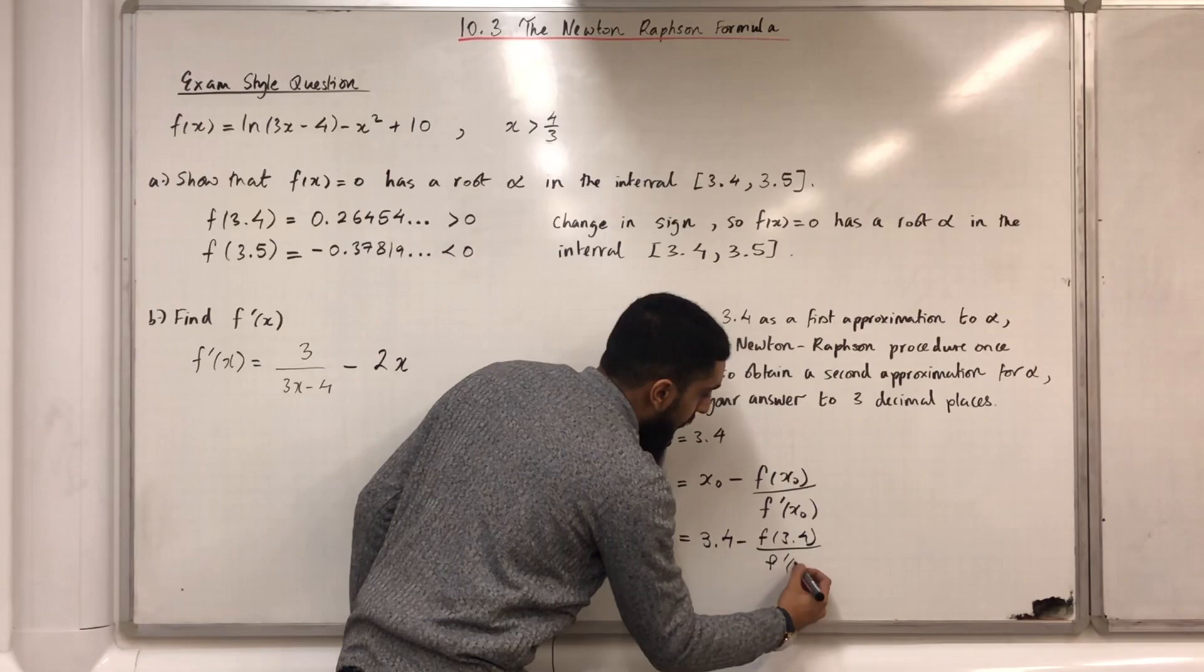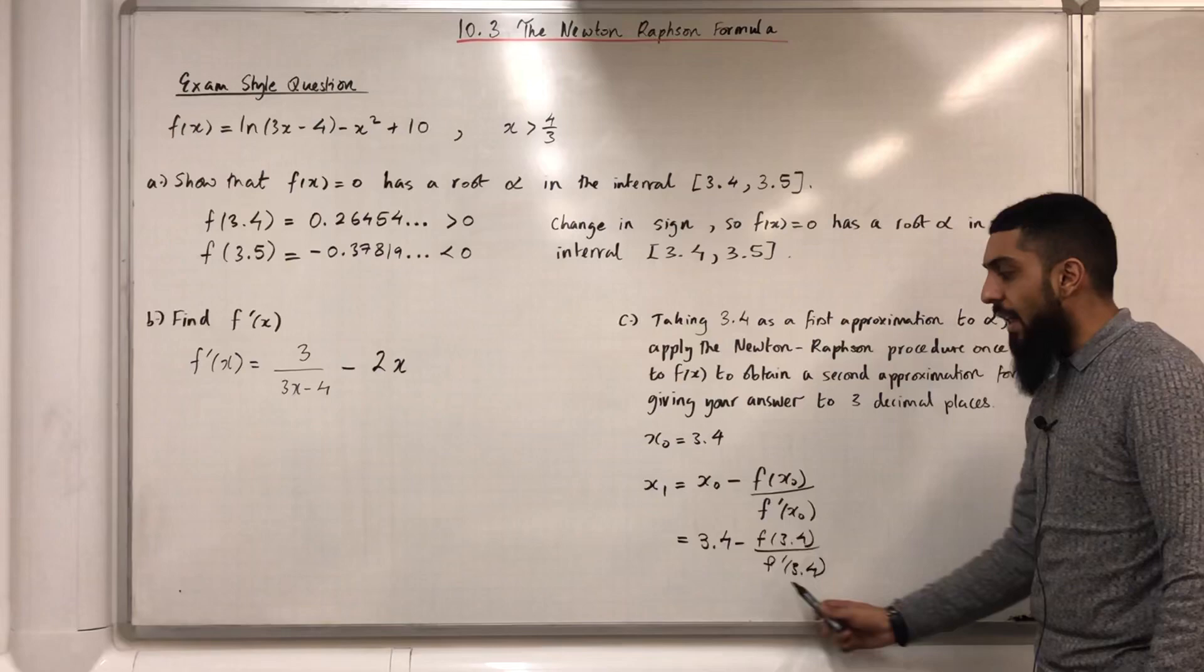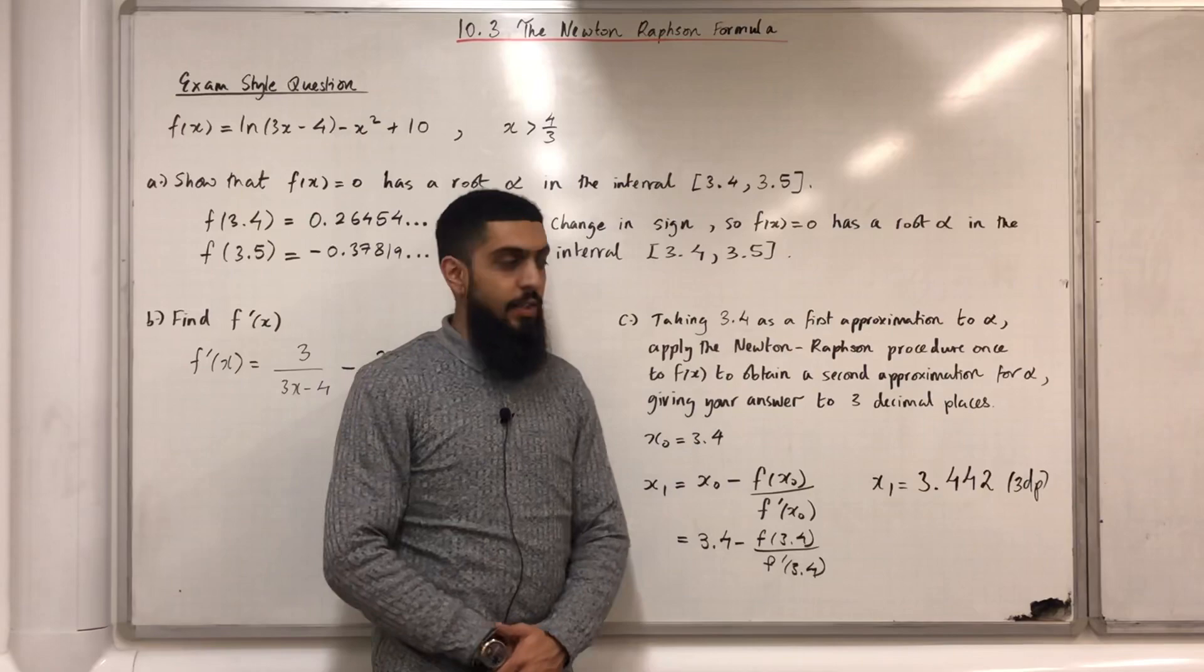So, I just put this into my calculator, and that will give me the second approximation for alpha. After using my calculator, the second approximation is 3.442 to three decimal places.